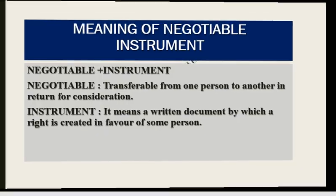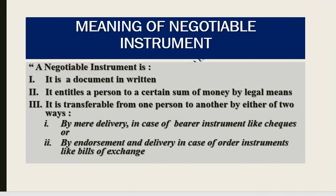Now we will understand what is the meaning of negotiable instrument. A negotiable instrument is a written document which entitles a person to a certain sum of money by legal means — meaning there is a right that a certain sum of money can be received. A negotiable instrument is transferable from one person to another by either of two ways: by delivery, or by endorsement — where we sign it and then deliver it.